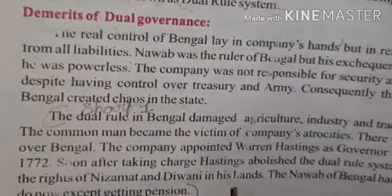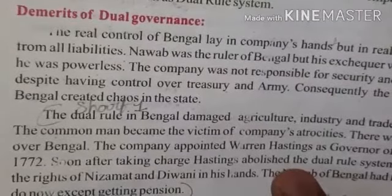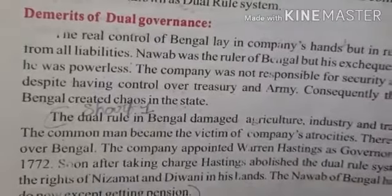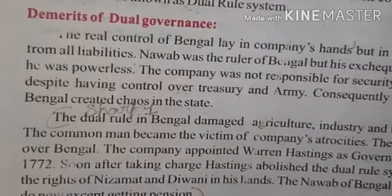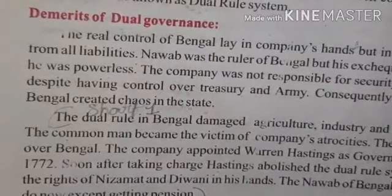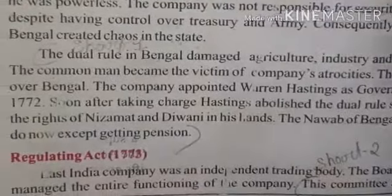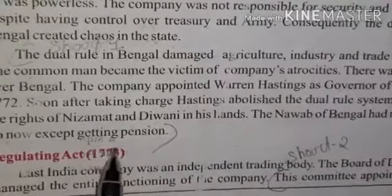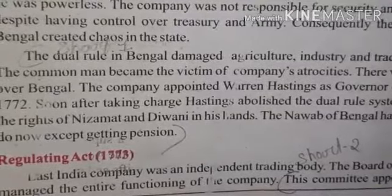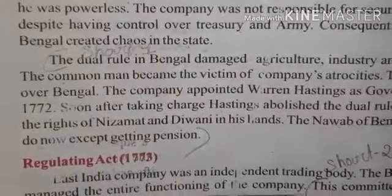But in 1772, Lord Hastings, who was the governor, took total rights. The company took everything under its control, and now the Nawab of Bengal had only one role — to receive a fixed amount from the company. That was the end of the dual rule arrangement.